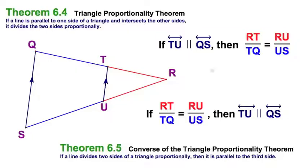So in the forward direction, we have this saying that if I know that TU is parallel to QS, then red is to blue as red is to blue. That's really nice.